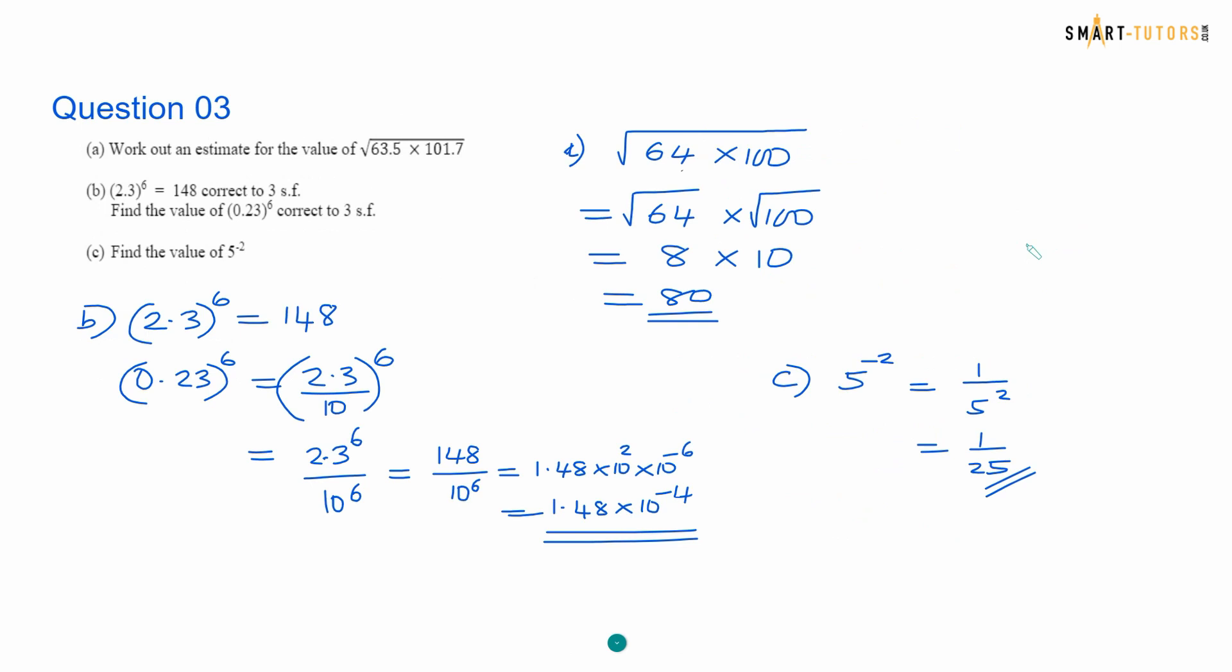Question number 3. Work out an estimate for the value. Square root of 63.5 is 64 times 100. Then square root of 64, you can split that into two parts, 8 and 10. Answer is 80. 2.6 to the power 6 is given 148 and 0.23 means you have to be careful, 2.3 divide by 10 to the power 6. That 6 belongs to both of the numbers, 2.3 to the power 6 and 10 to the power 6. So the first one is already given 148 over 10 to the power 6. The answer is 148 times 10 to the power 2 over 10 to the power 6, which is 1.48 times 10 to the power minus 4. 5 to the power minus 2 equals 1 over 5 to the power 2, so 1 over 25.